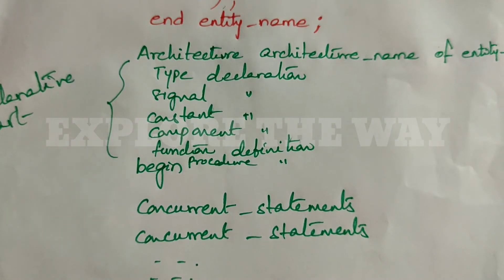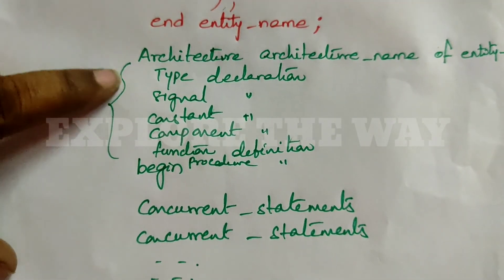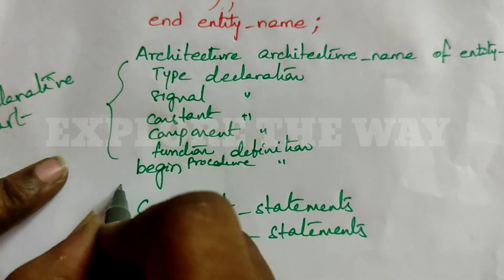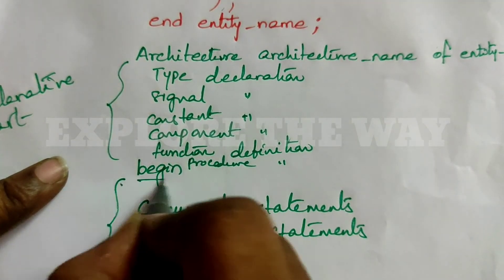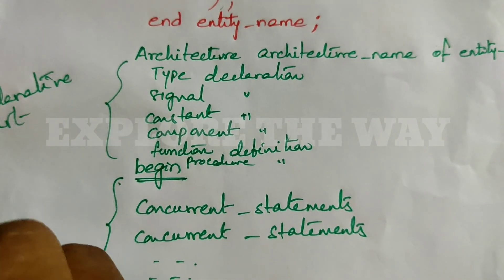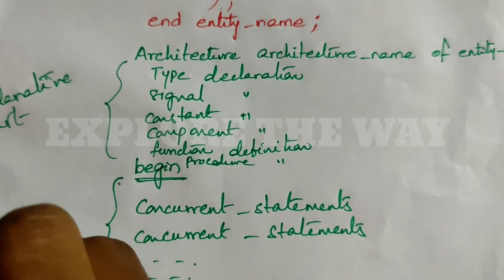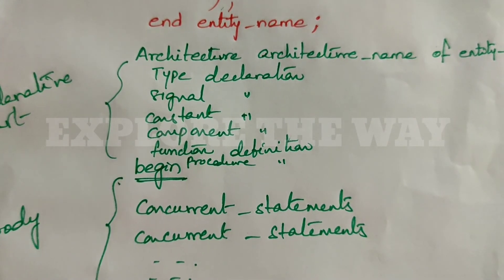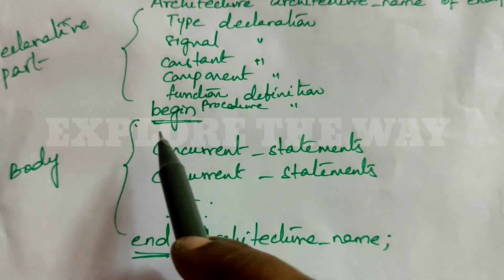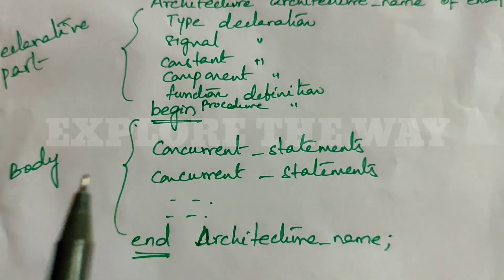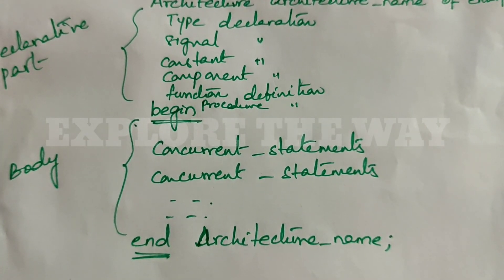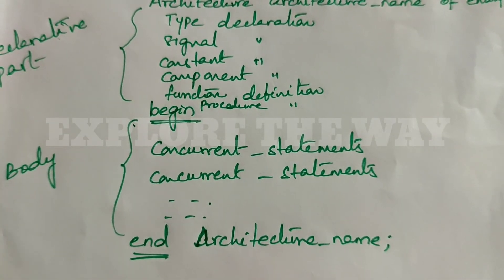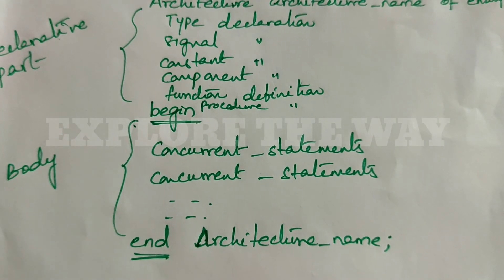Coming to architecture: the part before 'begin' is the declarative part, and the part between 'begin' and 'end' is called the body. The body of the architecture is described using any one of the three modeling styles — that may be data flow modeling style, behavioral modeling style, or structural modeling style, or a combination of one or more modeling styles.